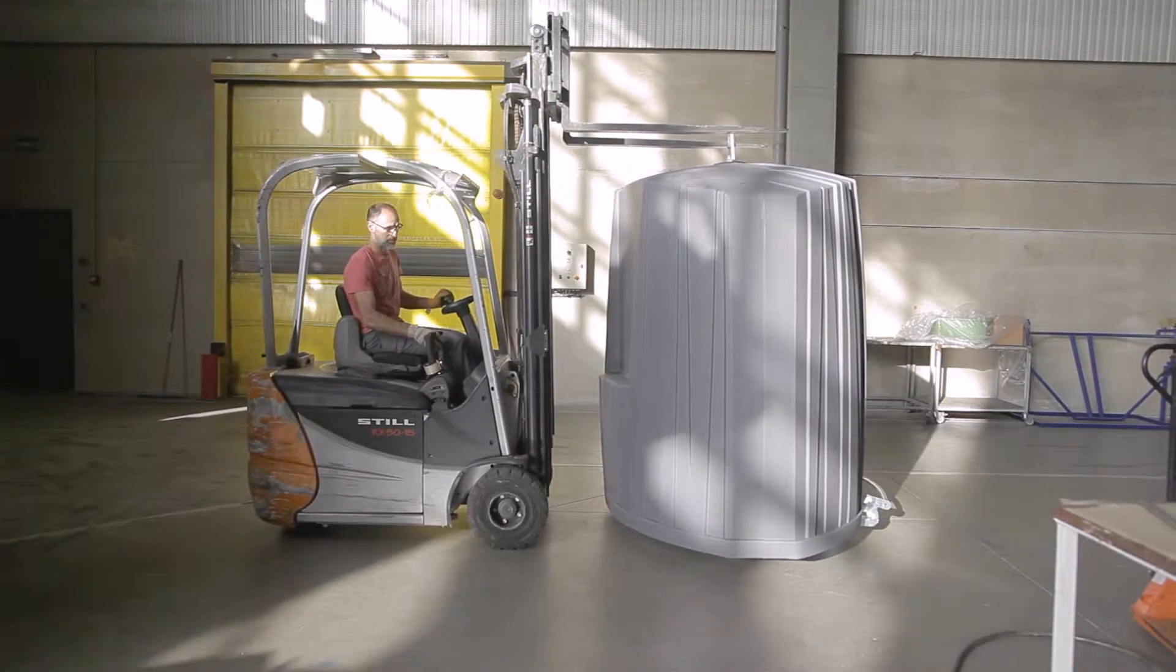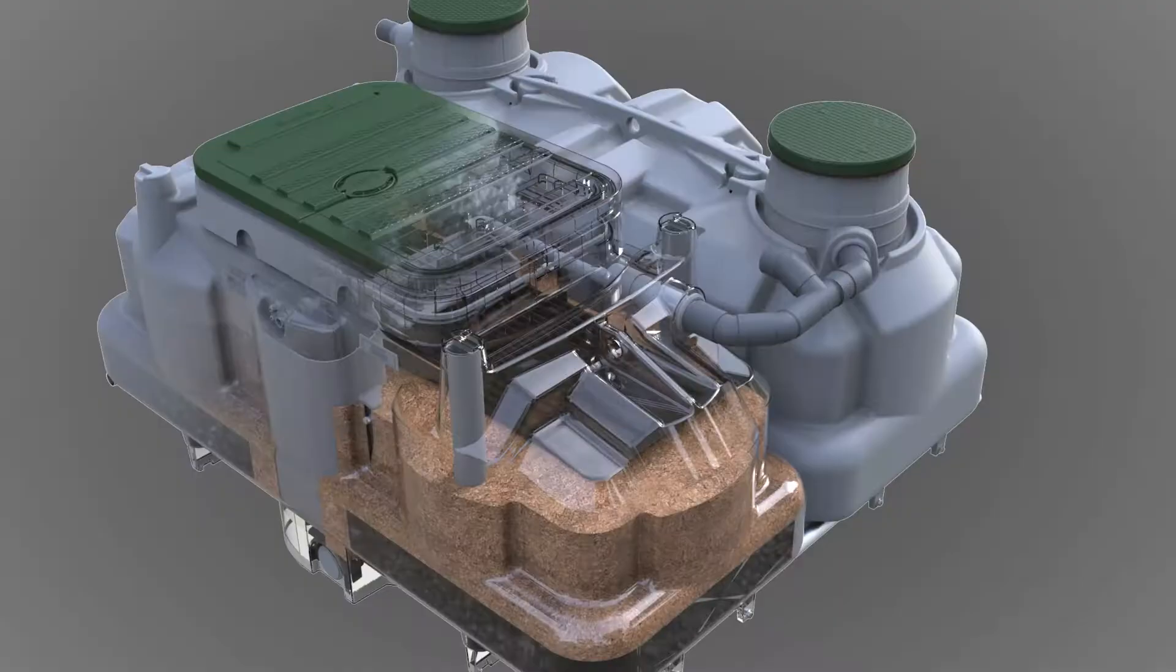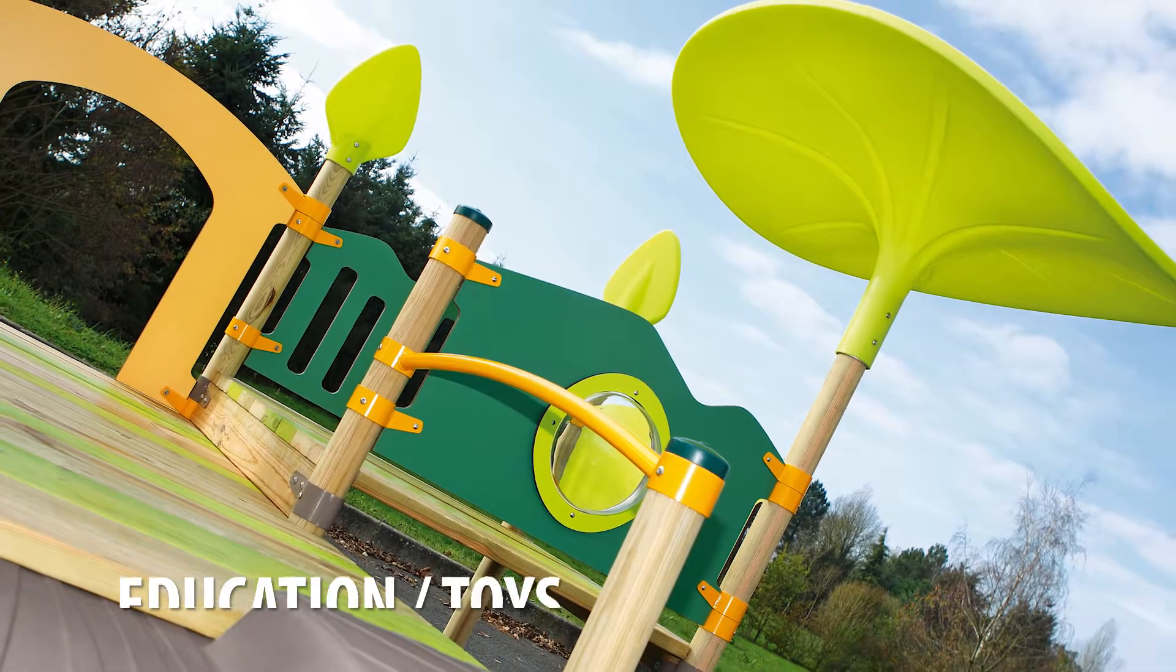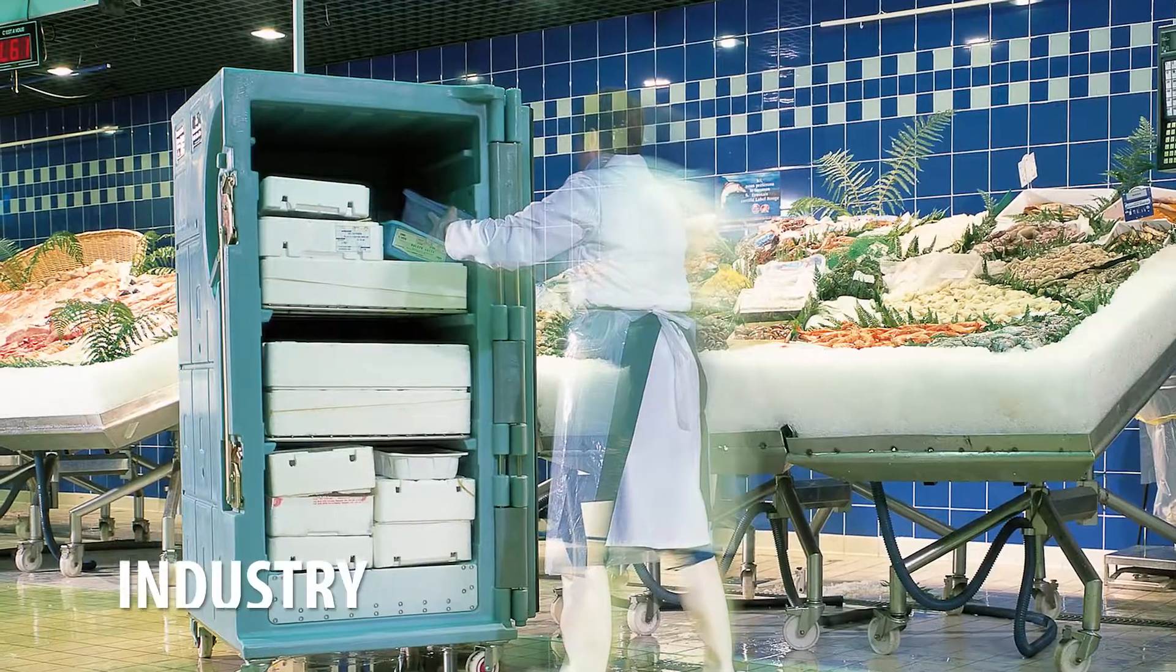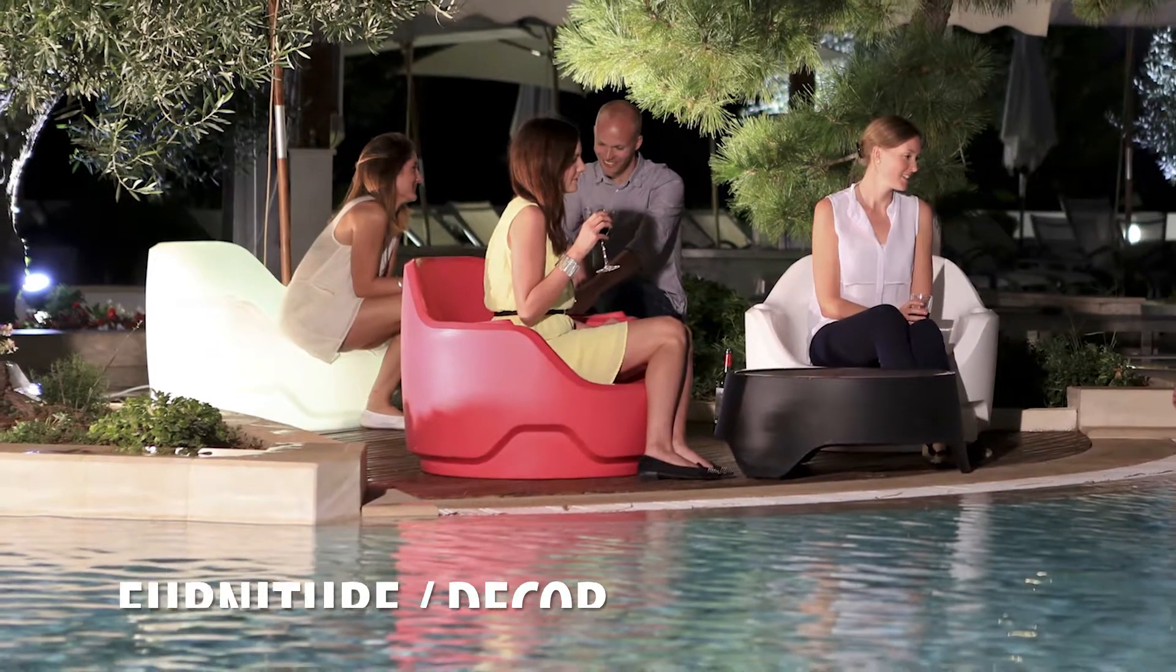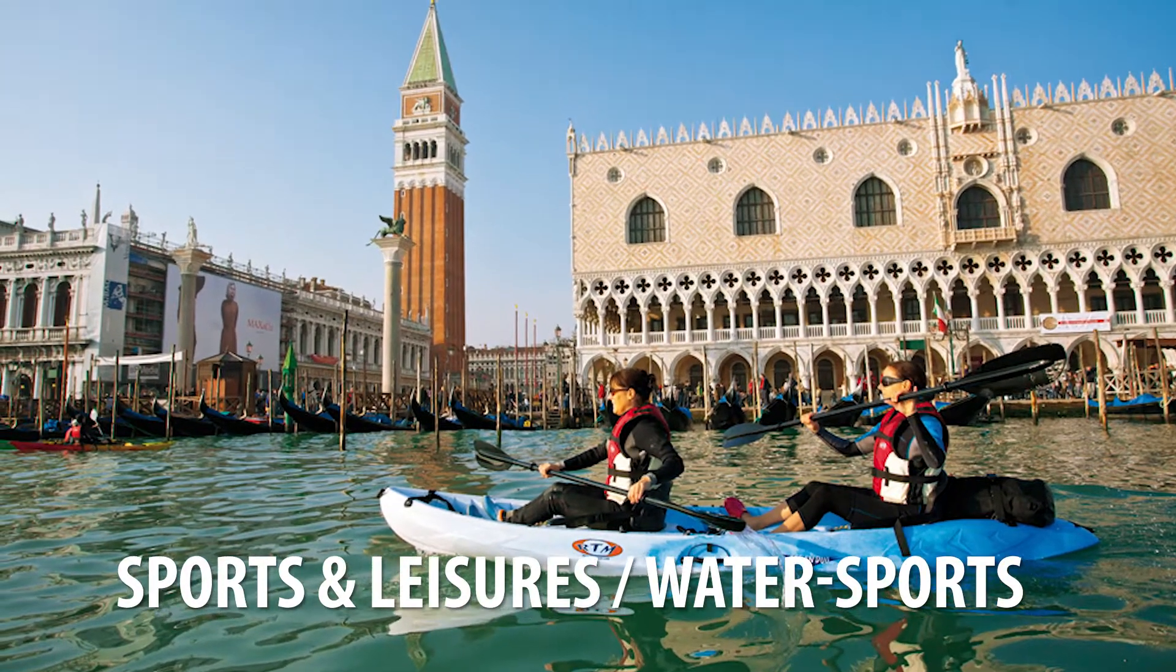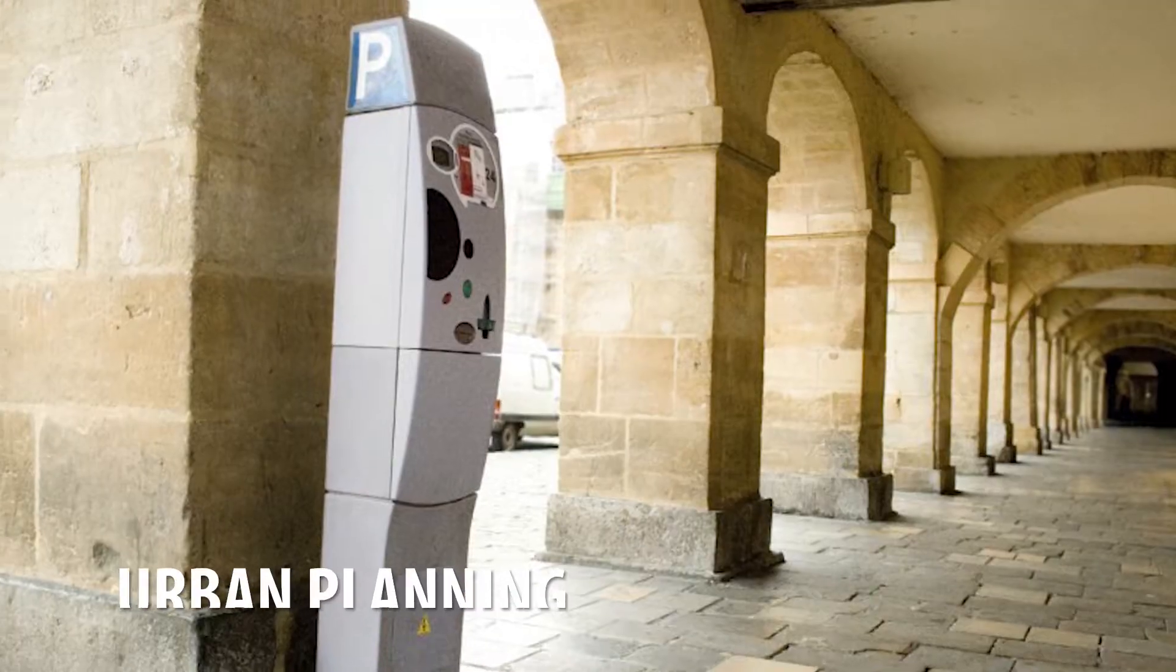Rotomoulded parts are a familiar feature of everyday life as they are used in many domains: Agriculture, Sanitation, Education and Toys, Environment, Industry, Furniture and Decor, Health and Safety, Sport and Leisure, Water Sports, Transport, and Urban Planning.